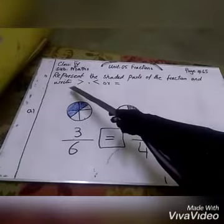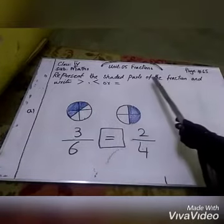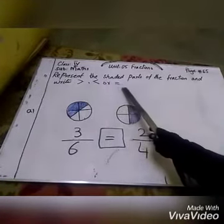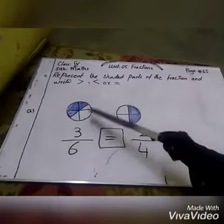Page number 65, Question number 1. We represent the shaded parts of the fraction and write greater than, less than, or equal. This circle is made in which we have parts.